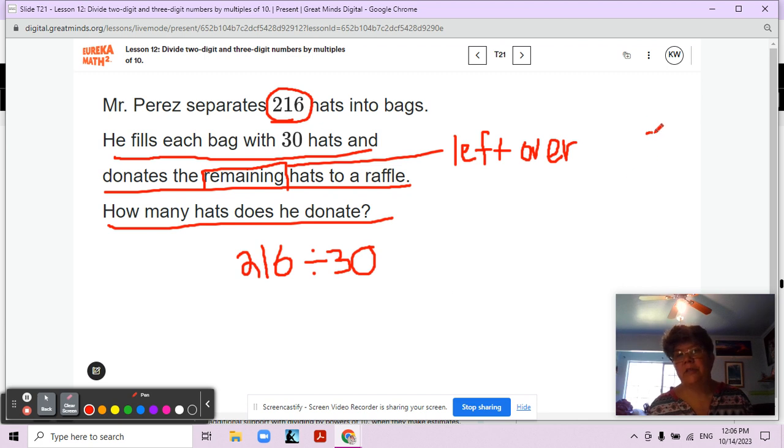216 divided by 30. In the expression 216 divided by 30, which number is the dividend and which one is the divisor? Dividend. Divisor. Divisor is the one doing the action. The number in each group. The number being divided. Dividend.